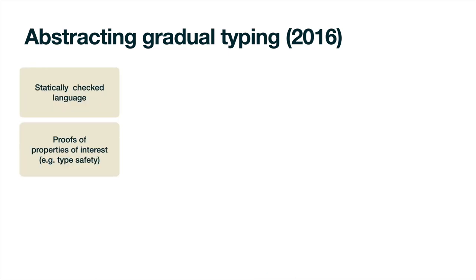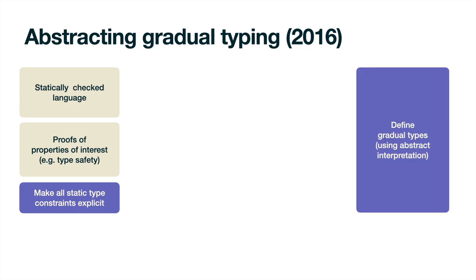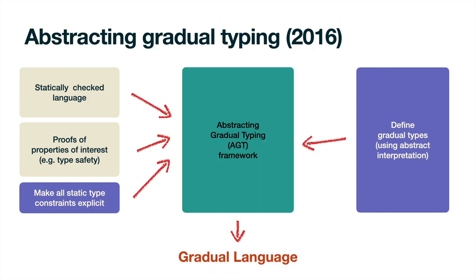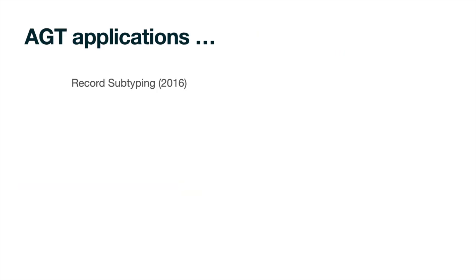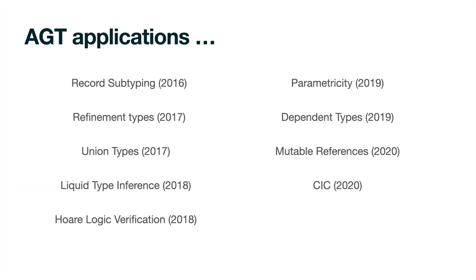Starting from a statically checked language that guarantees a certain property, for example type safety, and after a mechanical transformation of the type system rules to make all type constraints explicit, we apply designer intuition to define gradual types and their meaning, following a design process that uses ideas from abstract interpretation. All these parts act as input to the AGT framework to produce a gradual language. Appeals to intuition and design decisions are constrained to the definition of gradual types, as the framework itself provides a justification for all other operations and transformations required, which can then be performed mechanically. After being introduced in the context of records of typing, AGT has been successfully applied in multiple domains using the original methodology.